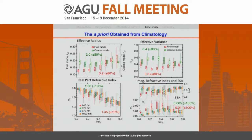These four panels give the climatology analyzed based on three years of data, providing the mean value and standard deviation of effective radius, effective variance, and the real and imaginary parts of the refractive indices. The standard deviation represents the natural variability of those parameters, and we use this climatology as our a priori.